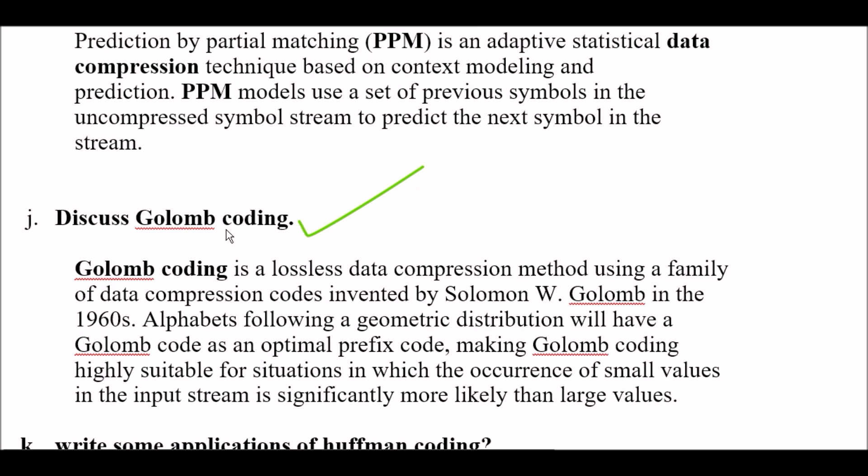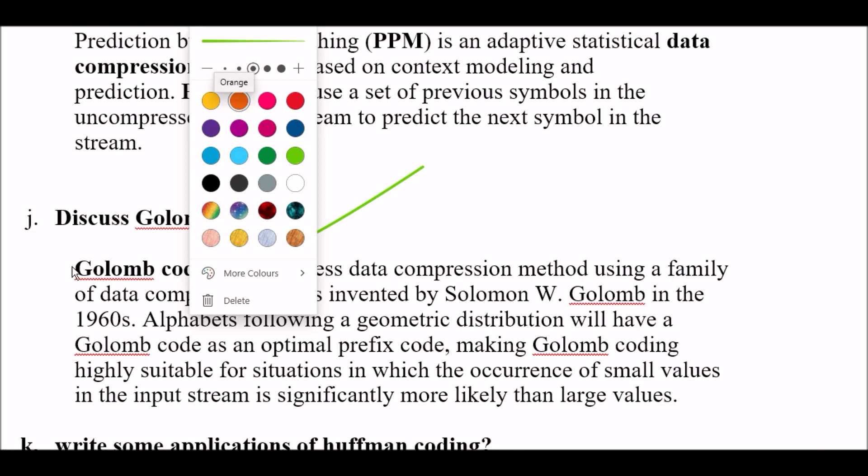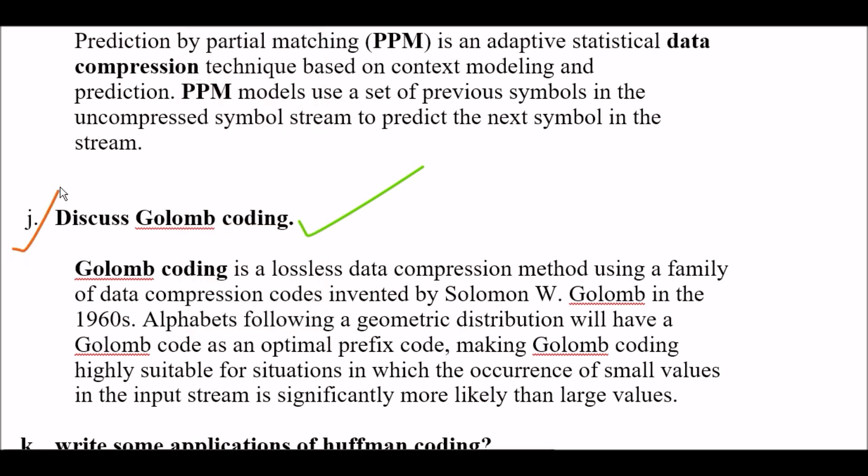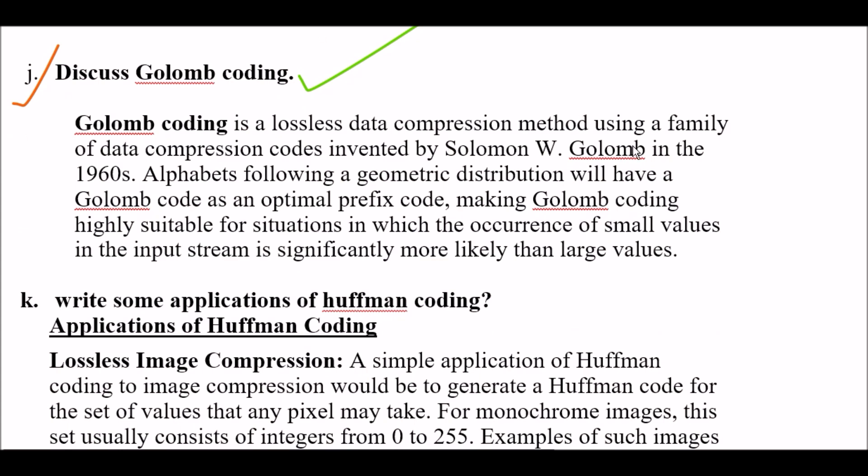Question J: Discuss Golomb coding. Very important. Golomb coding is a lossless data compression method using a family of data compression codes invented by Solomon W. Golomb in the 1960s. Alphabets following a geometrical distribution will have a Golomb code as an optimal prefix code, making Golomb coding highly suitable for situations in which the occurrence of small values in the input stream is significantly more likely than large values.